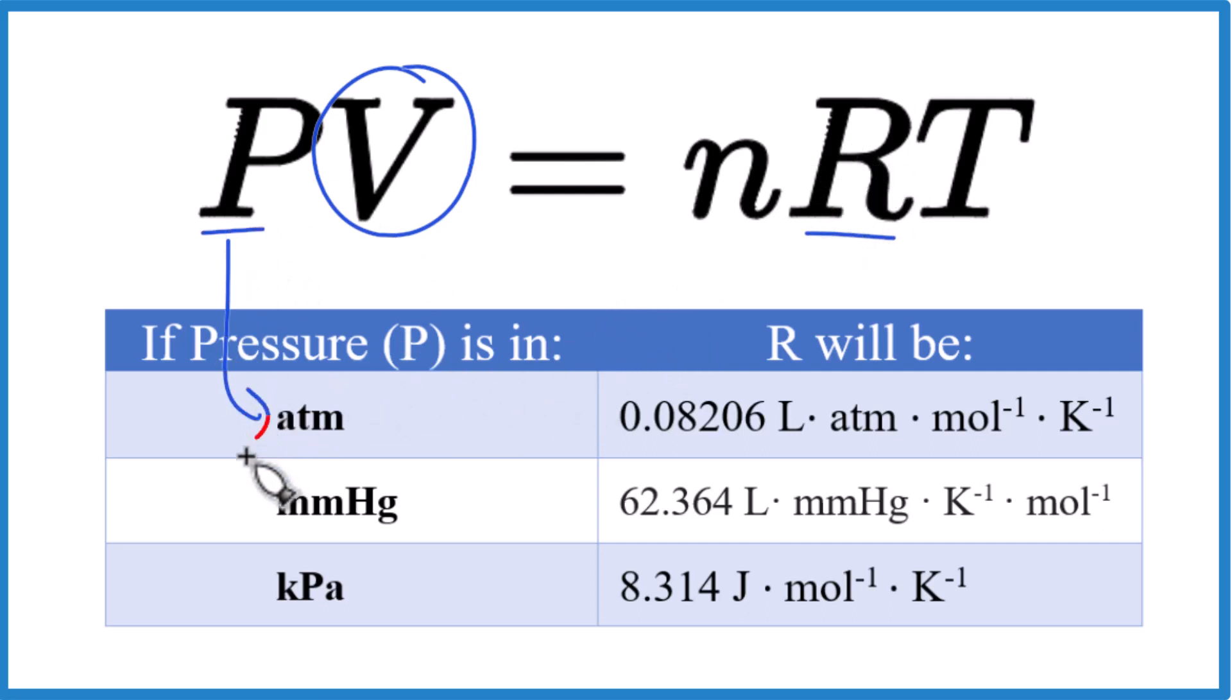So if pressure is in ATM here, this is the R we'll use. If it's in millimeters of mercury, we use this value for R, and if we have kPa, we'll use this value.